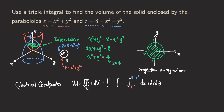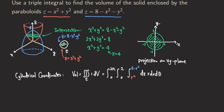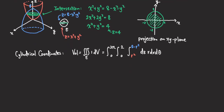The rest is quite simple. Once we finish with the innermost integral, we only need to worry about the projection region. Since this is a full circle centered at the origin, r goes from 0 to 2, and θ goes from 0 to 2π. Now we have the integral fully set up and just need to do the integration.